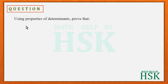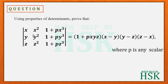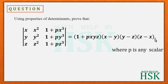The question is: using properties of determinants, prove that the determinant with rows (x, x², 1+px³), (y, y², 1+py³), (z, z², 1+pz³) is equal to (1+pxyz)(x−y)(y−z)(z−x), where p is any scalar.